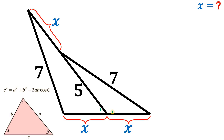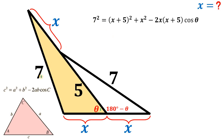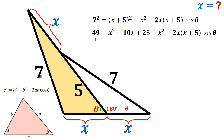To use the cosine law, let's call this angle theta. Since this is a linear pair, the remaining angle is 180 minus theta. Now let's apply the Law of Cosines to this triangle: 7² = (x + 5)² + x² − 2(x + 5)(x)·cos(theta).